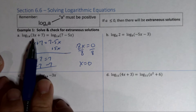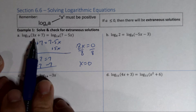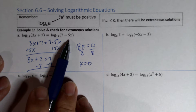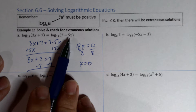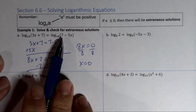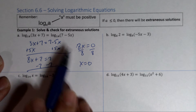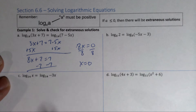Now we check: plug 0 into the left side — 3 times 0 is 0, plus 7 is 7. Plug 0 into the right side — 7 minus 5 times 0 is also 7. So plugging in 0 gave us log 7 = log 7, so x = 0 is valid.